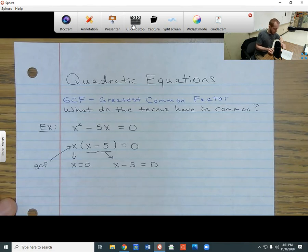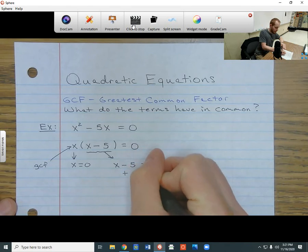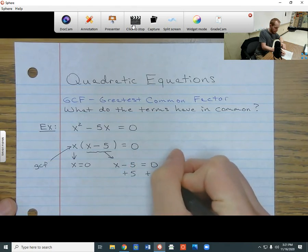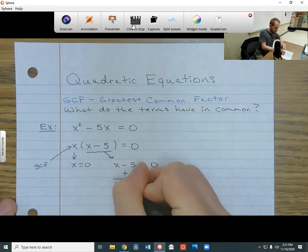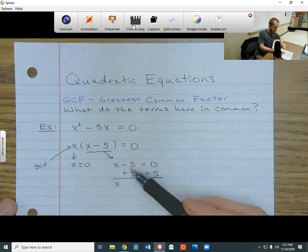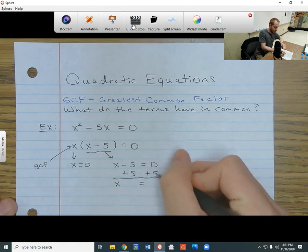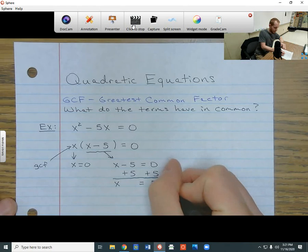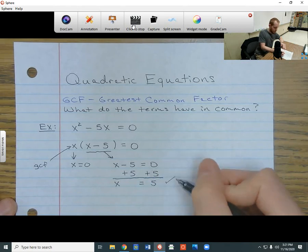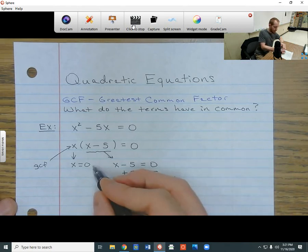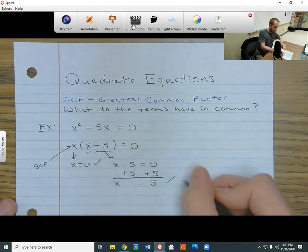I just need to solve this one. So to get that negative 5 out of the way, I can add 5 to both sides. And when I add 5 to both sides, the x is going to come down. The negative 5 and the positive 5 are going to cancel each other out. And then, zero plus 5 over on this side is going to give me 5. So now, I have two answers, five and zero. And I can put them inside my solution set.